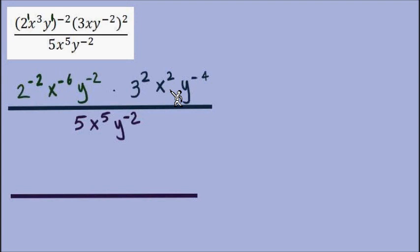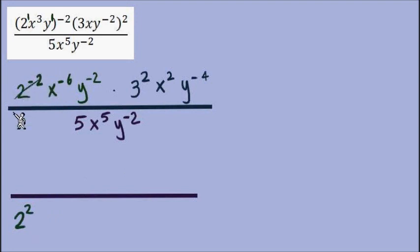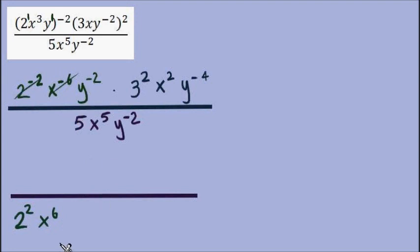If it's in the numerator, it stays there; if it's in the denominator, it stays there. Piece by piece, I decide if it should be moved or stay. Here's 2 to the power of negative 2 — I'm going to move that from numerator to denominator, with a little cross out to tell myself I've dealt with that one. x to the negative 6 will also move to the denominator as x to the positive 6. y to the negative 2 moves to y to the positive 2 in the denominator.